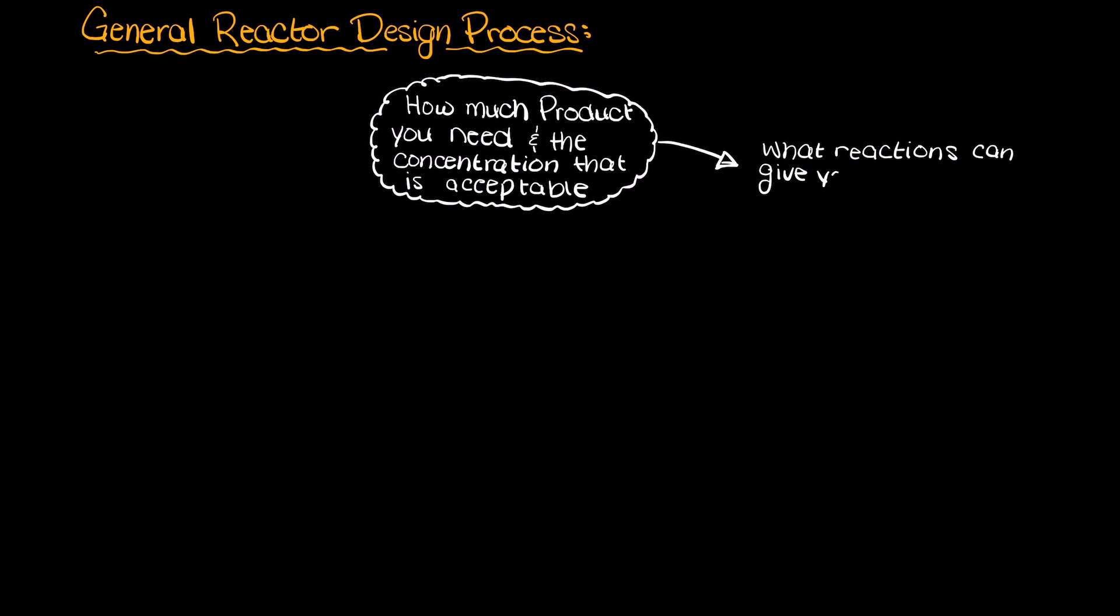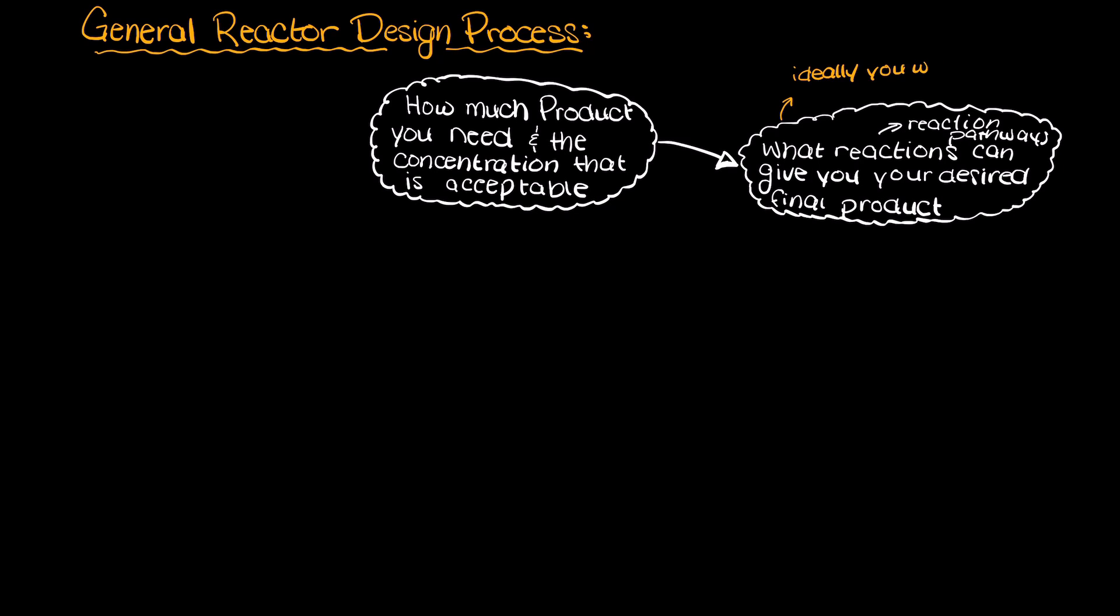Then you need to begin looking at what reactions can give you your final product. Typically this will require quite a bit of research as there are many different ways to reach a final product. However, ideally you want the most direct or the cheapest to produce and in looking at different potential reaction pathways it is important to understand the operating conditions necessary for each reaction. So the temperature and pressures that are needed to force each reaction.